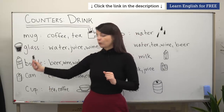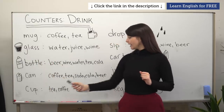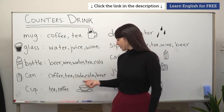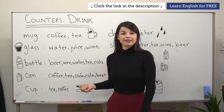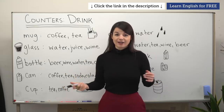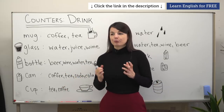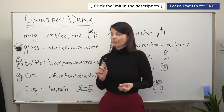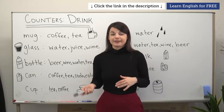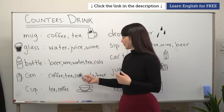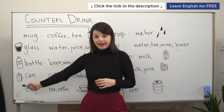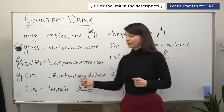Next is can. We can have a can of coffee, a can of tea, a can of soda, a can of cola, a can of beer. By the way, the difference between soda and cola really depends on the place you're in. Depending on where you are in the US or any other English-speaking country, there might be a preferred way of saying cola, soda, or even pop. Many people use different words to mean the same thing — it depends on region. If a drink is sold in a can, we can use can to describe it.